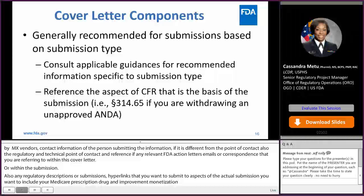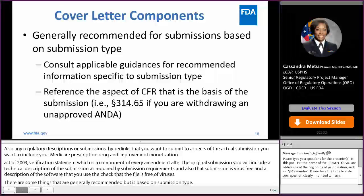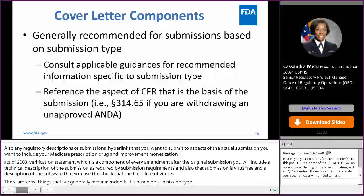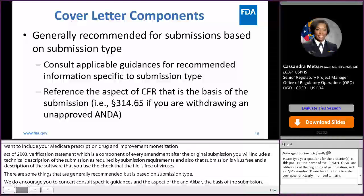Now, there are some things that are generally recommended but based on submission type. We do encourage you to consult applicable guidance for recommended information, and then also reference the aspect of the CFR that is the basis of the submission. One of the common things is going to be if you're going to withdraw an unapproved application, you want to cite that you are withdrawing that unapproved application based off of the CFR information.